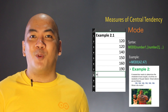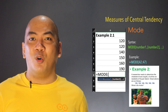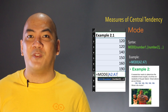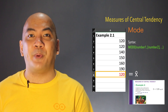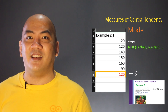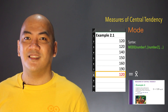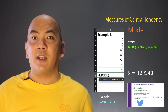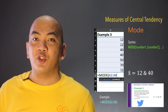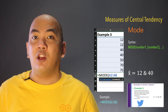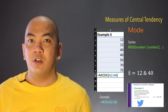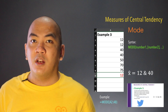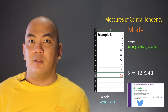Similarly, for mode, just type the equal sign, then MODE, then the cell reference of the first and last observation in parenthesis, then press the Enter key. Note that for bimodal, trimodal, and multimodal data, the MODE function gives only the lowest among the modes. So if you have 12 and 40 as the modes, the MODE function gives only 12.